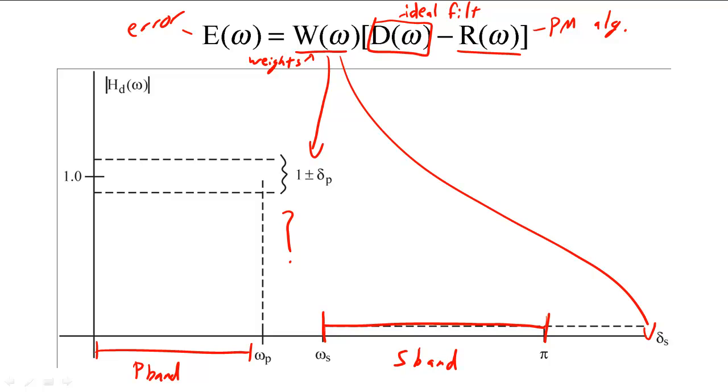Typically, we specify one weight for the passband and one weight for the stopband. These weights will force the filter to not deviate from d omega, the ideal filter, more than a fixed amount.